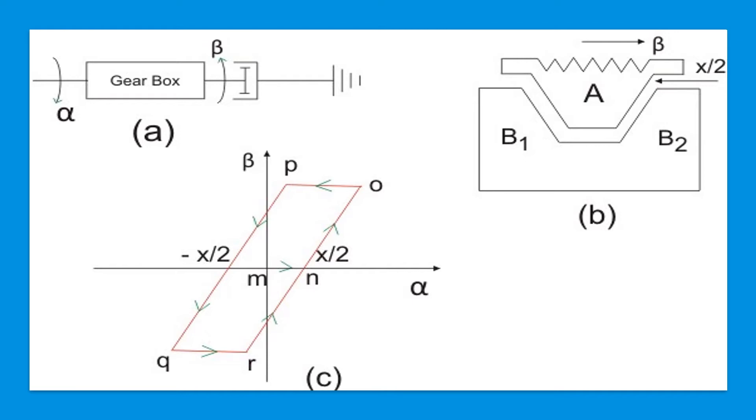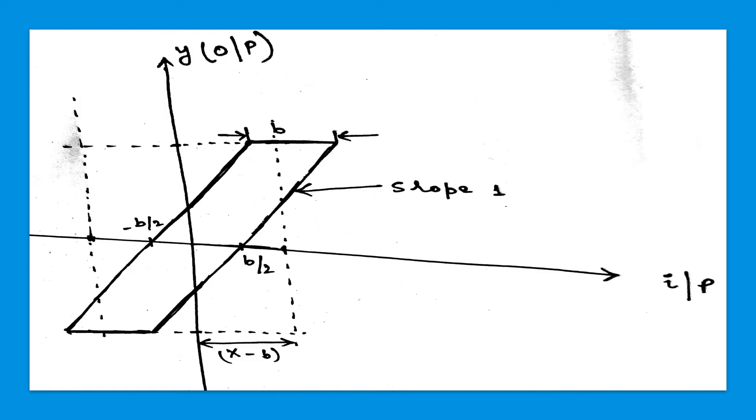After the tooth A establishes contact with the tooth B2, the driven gear now moves in a clockwise direction as shown by segment PQ. As the input motion is reversed, the driven gear again exhibits backlash nonlinearity for the segment QR and then follows the drive gear along RN, showing the hysteresis phenomenon in its characteristic curve.